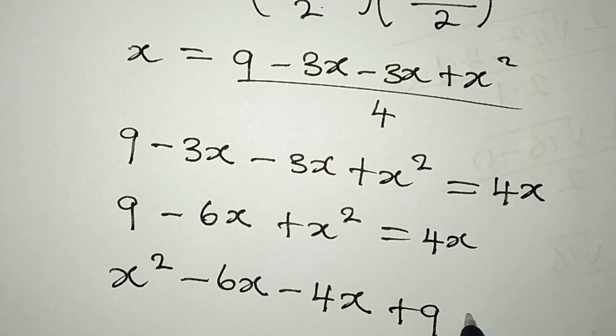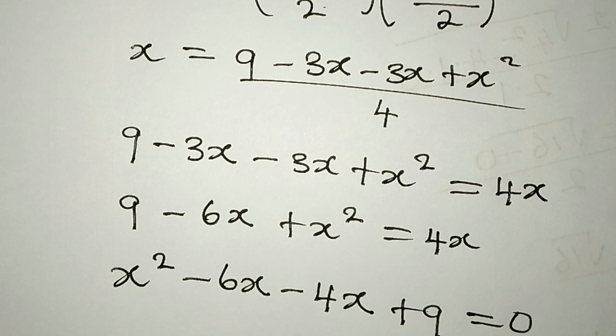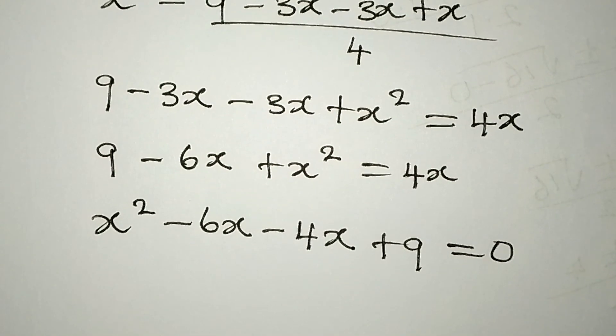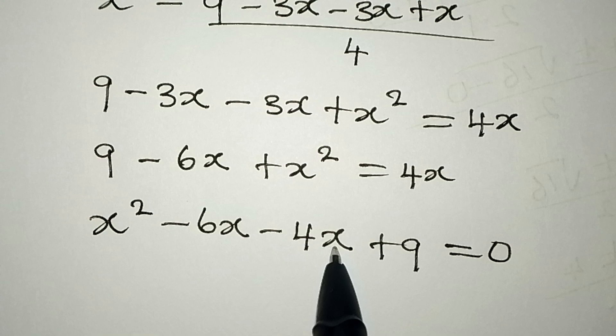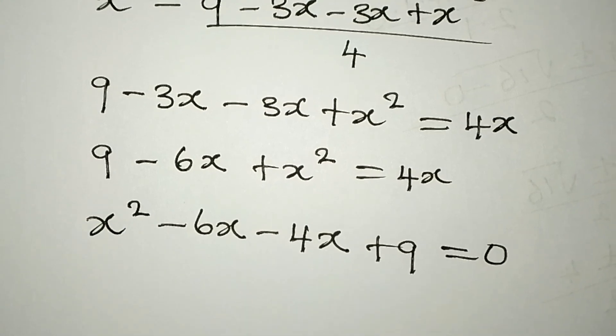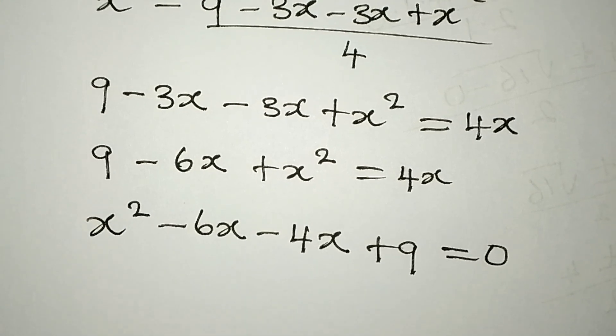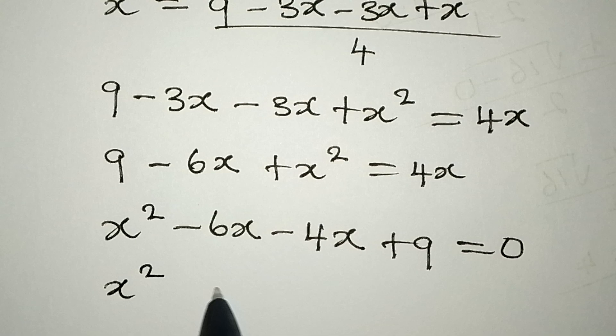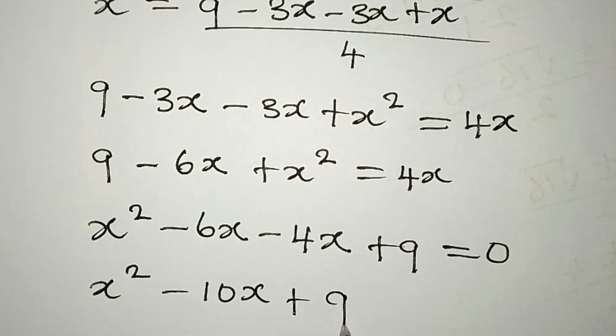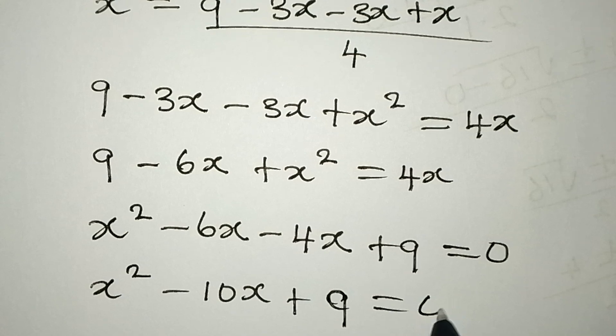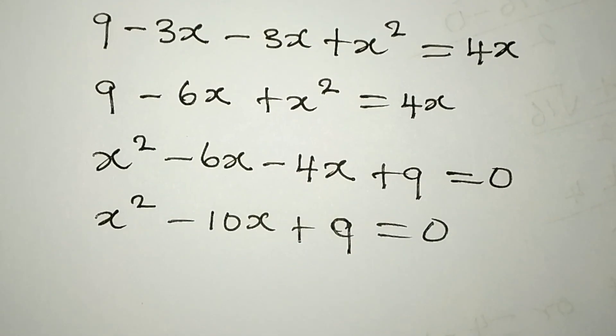So x² - 6x - 4x + 9 = 0, which simplifies to x² - 10x + 9 = 0.